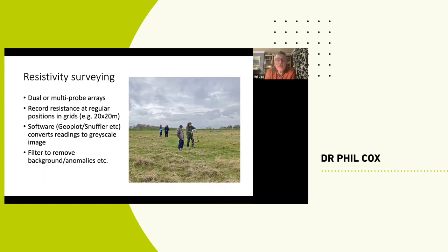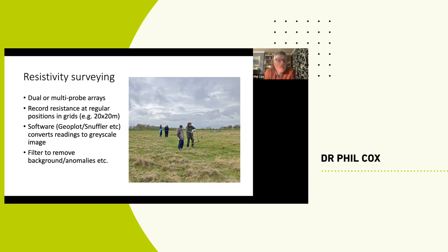You can use either two probes or multi-probe arrays. For Glossarc, with our modest budget, we use a simple resistivity meter with two probes on the bottom connected to a box of electronics, with a wire running to remote probes. We lay out 20-metre grids and measure every metre, giving 400 points per grid. The data is downloaded into analysis software such as Geoplot or Snuffler — Geoplot is expensive, Snuffler is free, so I tend to use Snuffler. This converts the readings and coordinates into a greyscale image; with some filtering and interpolation you can often produce a sharp image of what's underground.